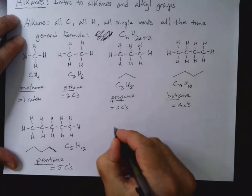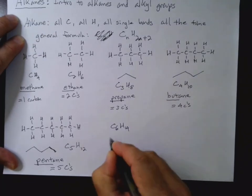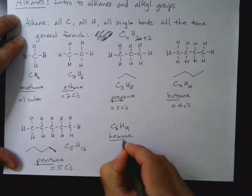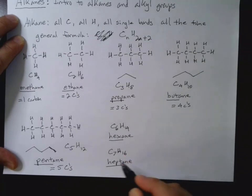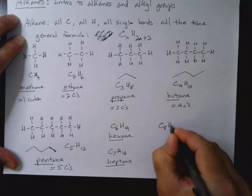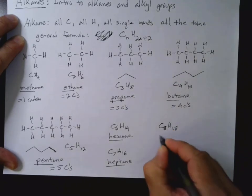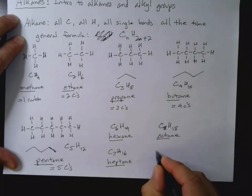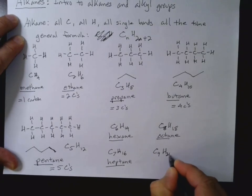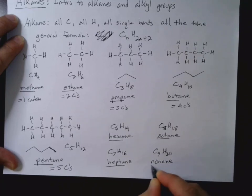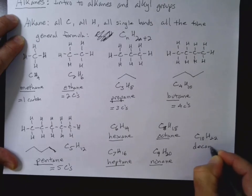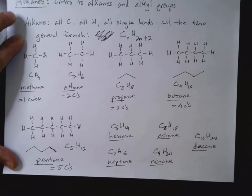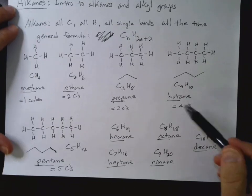Now I'm not going to draw these, but we can have C6H14 is hexane, C7H16 is heptane, so hex is six, hept is seven, C8H18 is octane, C9H20 is nonane, and C10H22 is decane.